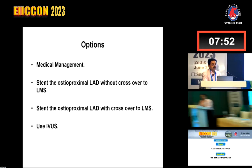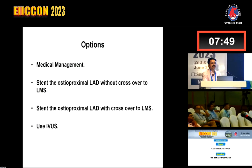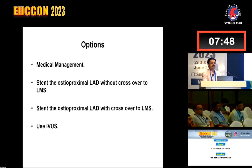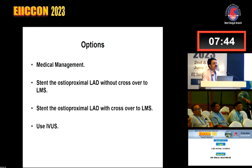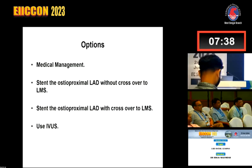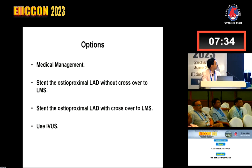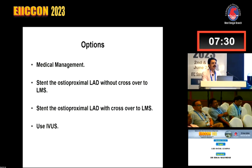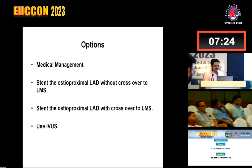The second option: stent the osteo-proximal LAD with crossover to the left main stem. The majority favor crossing over. And the fourth option: obtain more information by doing an IVUS. There is a group that wants to do IVUS, because we are increasingly agreeing that angiography alone is probably not enough to deal with these kinds of lesions.